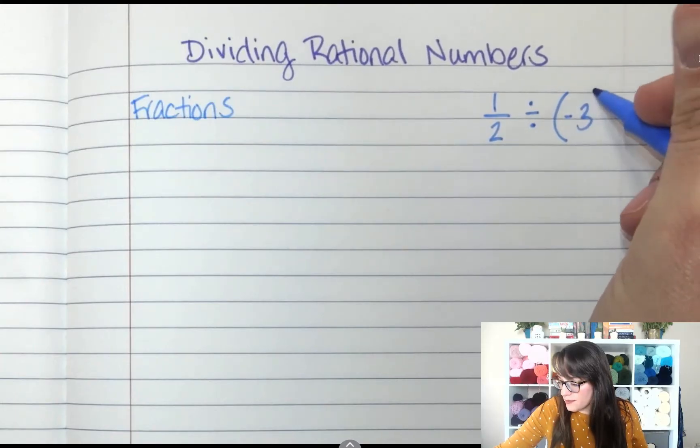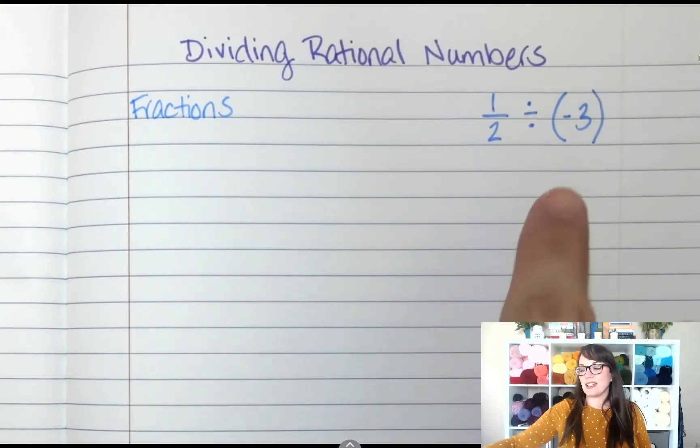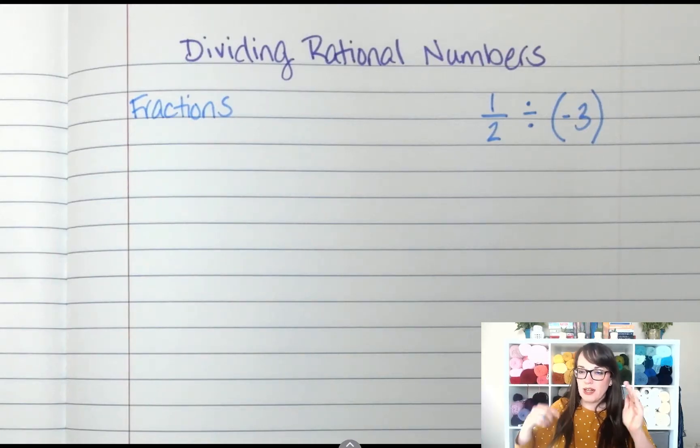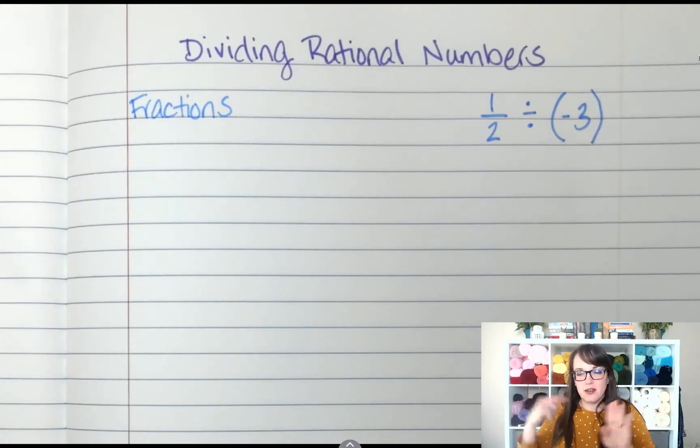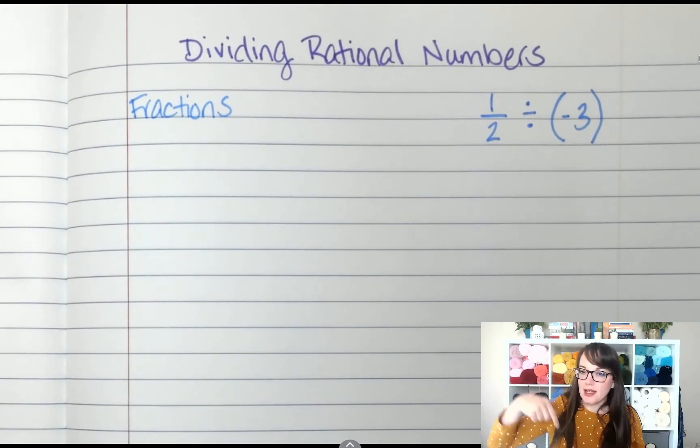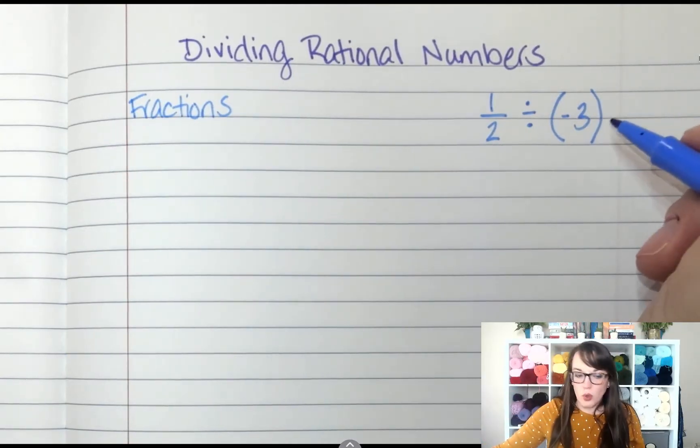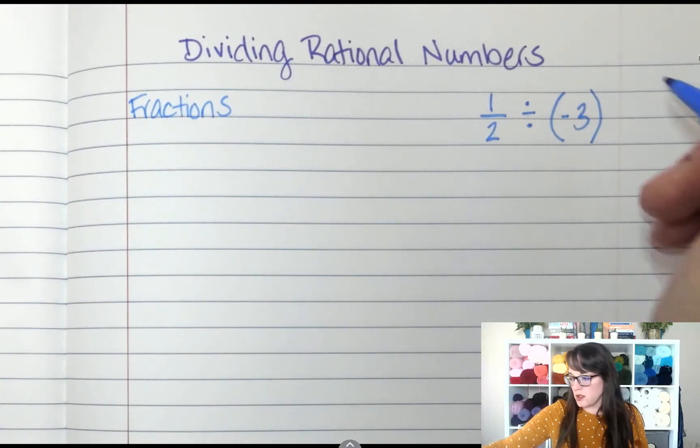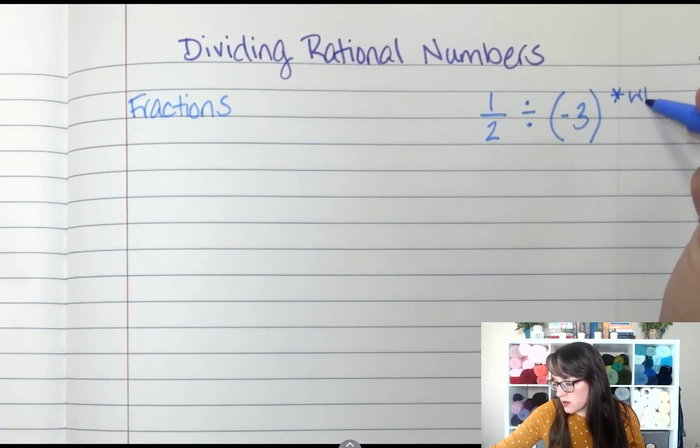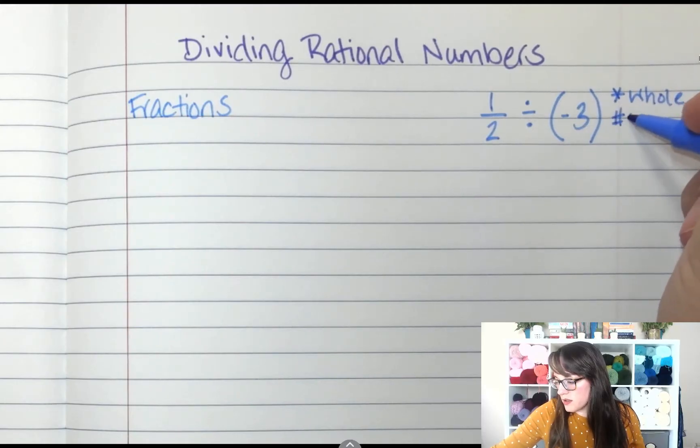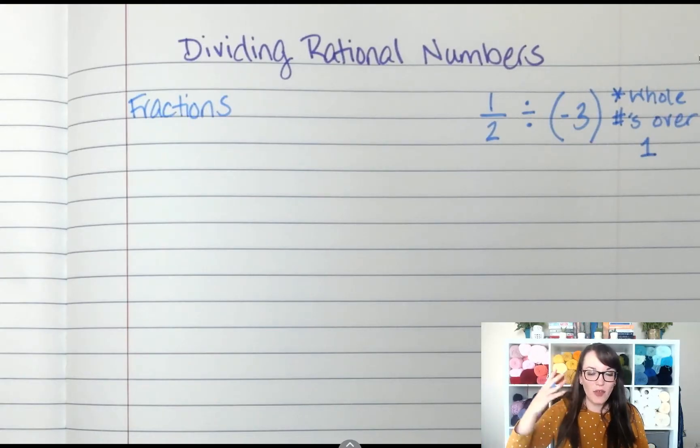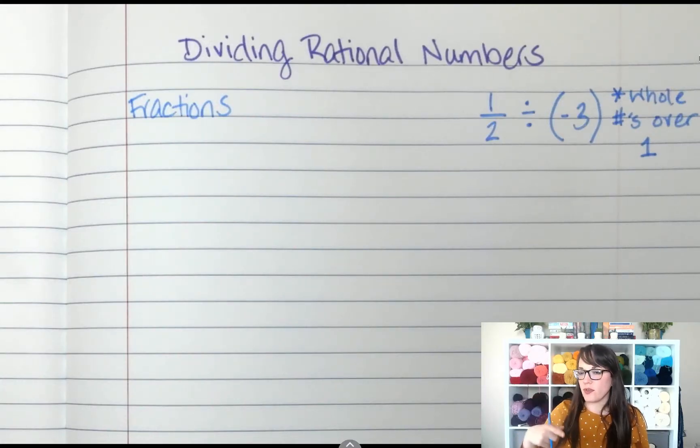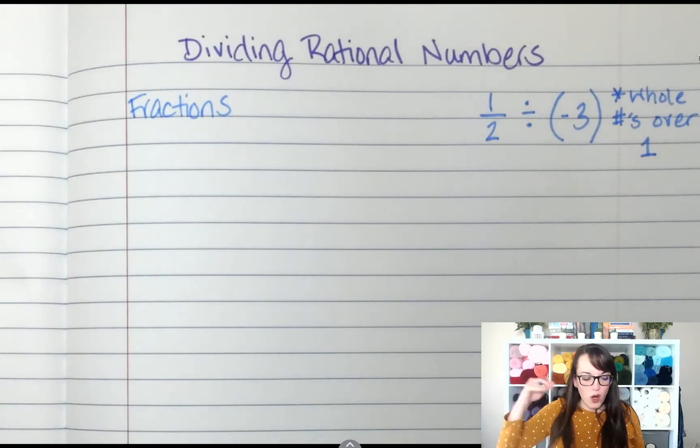So if I have the fraction 1/2 and I want to divide it by negative 3—now when I put that negative 3 inside the parentheses like this, I'm only separating that negative sign from the division sign so that you don't end up with a sign next to a sign. Remember last time we did something like this, we're going to put our whole numbers over 1. All whole numbers are over 1 because negative 3 divided by 1 is negative 3. So if I put a 1 underneath that, it's still negative 3, just looks different.